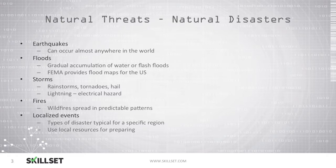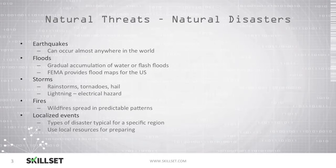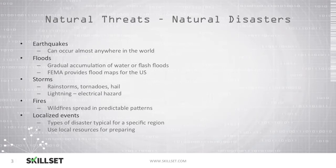Natural disasters definitely have the potential to threaten your organization. Earthquakes can occur almost anywhere in the world. Floods can occur gradually or as a flash flood. FEMA, the Federal Emergency Management Agency, provides flood maps for the United States which you can use to avoid placing your organization's facilities in flood-prone areas. Storms such as tornadoes, hail, and rainstorms can also cause problems, and lightning can create an electrical hazard.